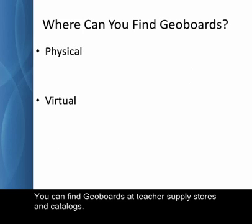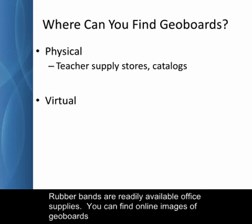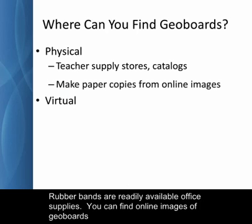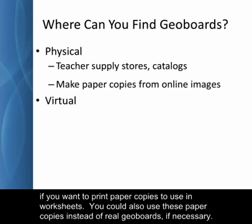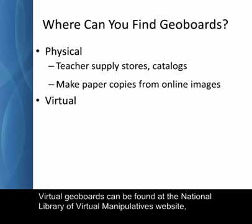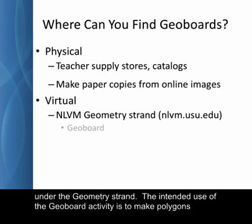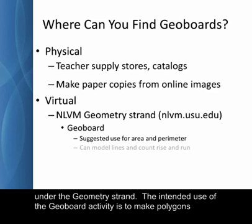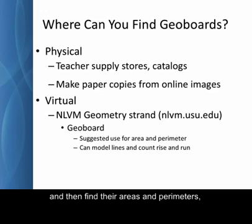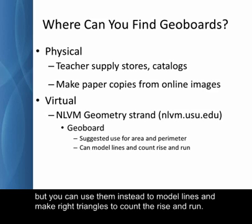You can find geoboards at teacher supply stores and catalogs. Rubber bands are readily available office supplies. You can find online images of geoboards if you want to print paper copies to use in worksheets. You could also use these paper copies instead of real geoboards if necessary. Virtual geoboards can be found at the National Library of Virtual Manipulatives website under the geometry strand. The intended use of the geoboard activity is to make polygons and then find their areas and perimeters, but you can use them instead to model lines and make right triangles to count the rise and the run.